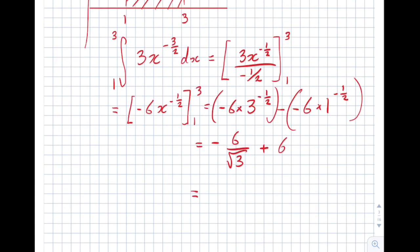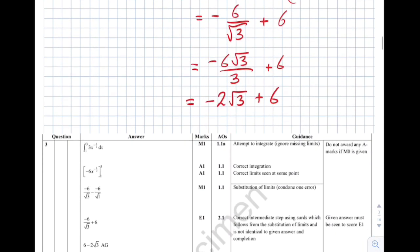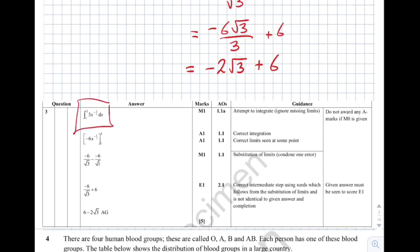We should rationalise the denominator. Multiplying top and bottom by root 3 gives minus 6 root 3 over 3 plus 6. Cancelling the 6 and 3 down to 2 gives minus 2 root 3 plus 6, which is 6 minus 2 root 3 — and that's the answer. The mark scheme gives marks for setting up the integral, correct integration, correct limits, substituting the limits, a correct intermediate step, and arriving at the answer.